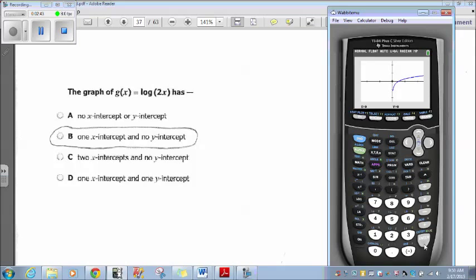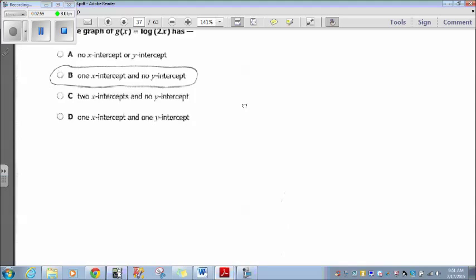Take a look at it. Well, it does have an x-intercept right there. But there is no y-intercept. It actually is going to have an asymptote. So it has one x-intercept, no y-intercept. All right. Choice B is our answer here. Okay. Let's go on. Question 34.